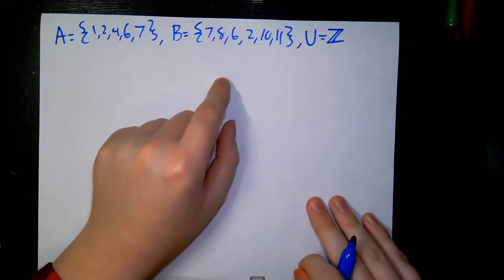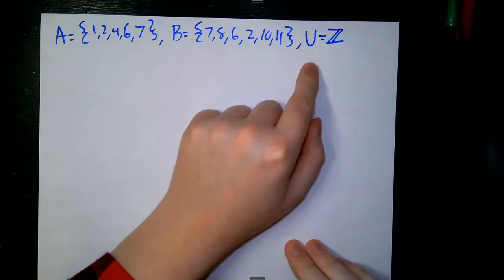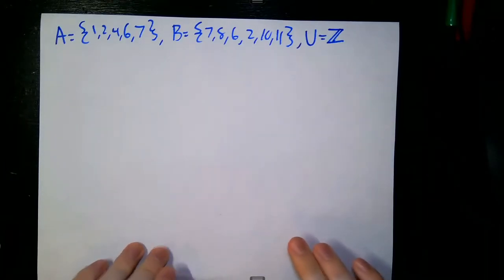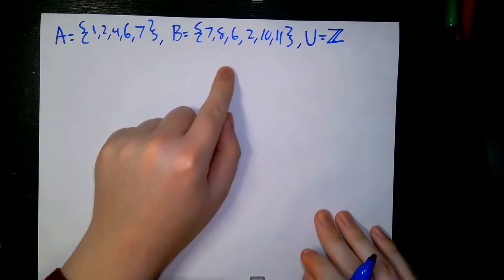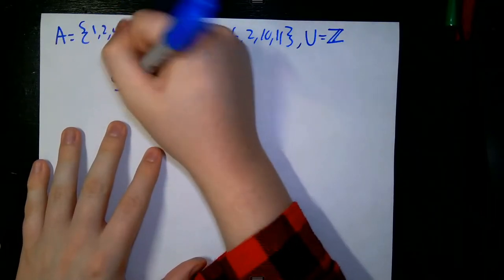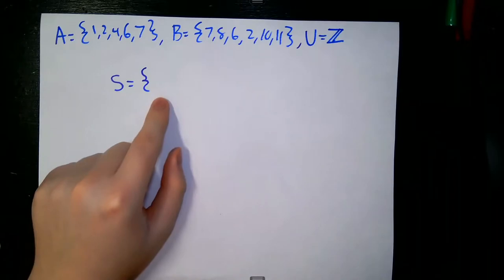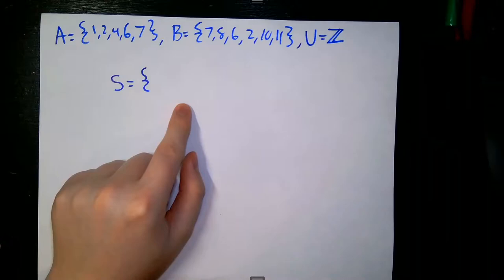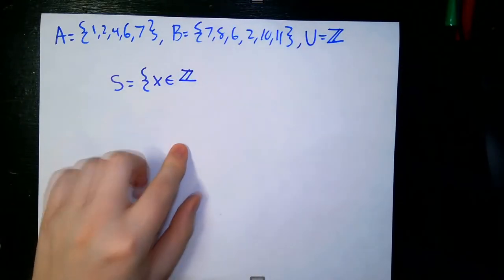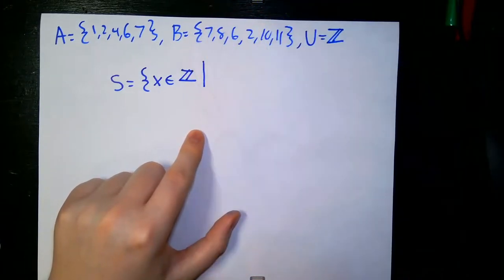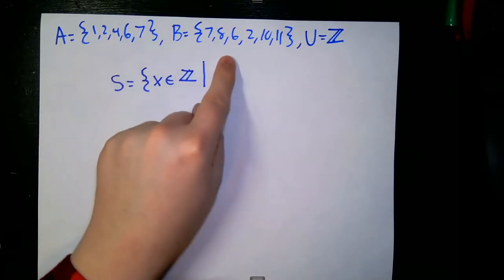Order doesn't matter for sets. Our universe is going to be the set of all integers. Let's look at how we can use set builder notation to build the set of all elements that are both in A and in B. We'll name our set S, and start with x in the universe — the integers — then draw the 'such that' bar. We want x to be an element of A and an element of B.